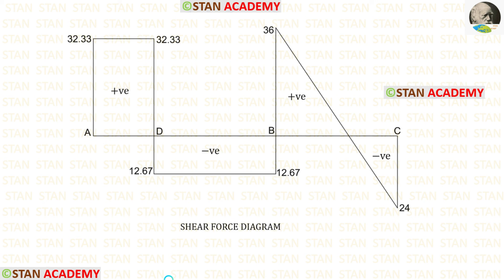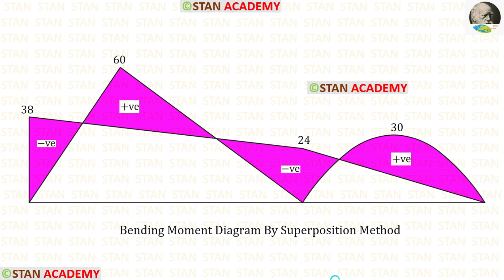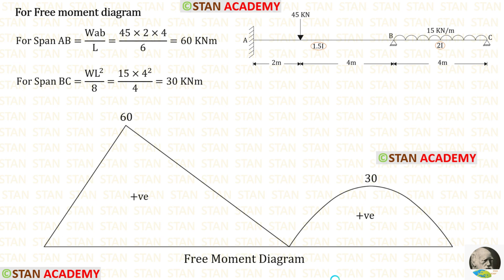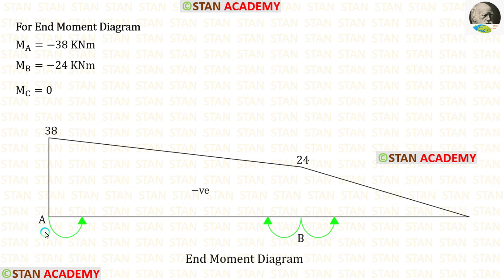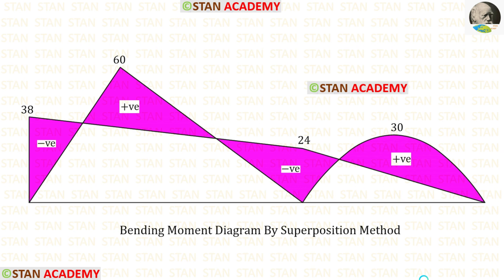Here you can see the shear force diagram. We can draw the bending moment diagram by the superposition method: first make the free moment diagram assuming each span as a separate simply supported beam using the relevant formulas, then draw the end moment diagram using the direction of end moments, and finally combine both diagrams to get the bending moment diagram. I have analyzed the same beam by stiffness matrix method, slope deflection method, three moment equation method, flexibility matrix method, and moment distribution method — all links are given below. Thank you for watching this video.